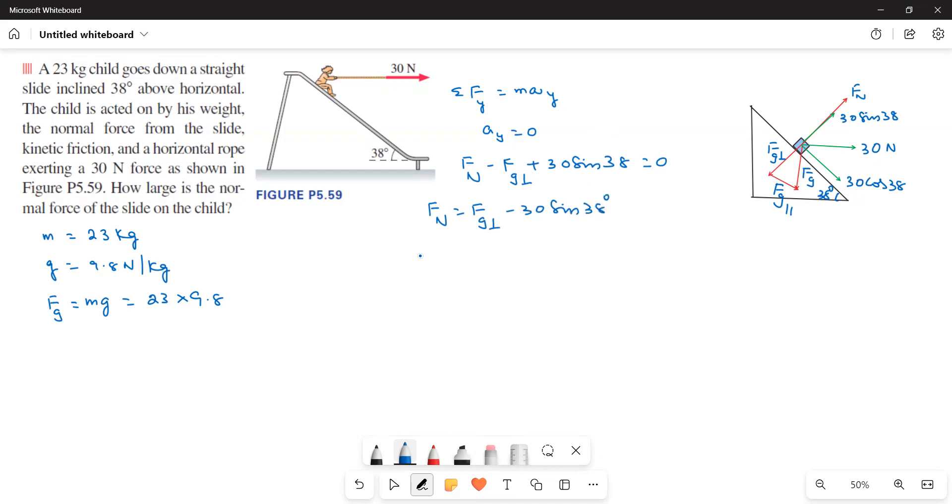Now, what is FG perpendicular? FG perpendicular is FG, this because this is 38 degrees. Therefore FG parallel is equal to MG sin 38 and then FG perpendicular is equal to MG cos 38.